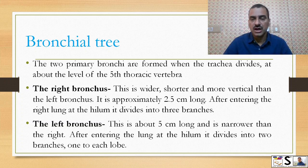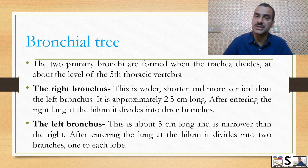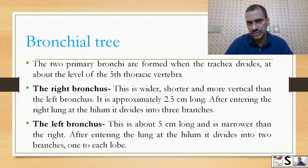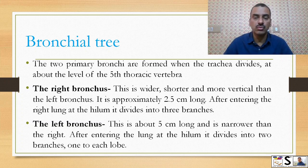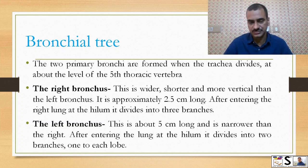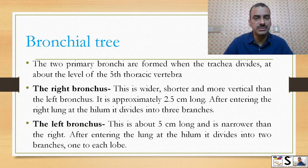The two primary bronchi are formed when the trachea divides at about the level of the fifth thoracic vertebra, forming the right bronchus and the left bronchus. The right bronchus is wider, shorter, and more vertical than the left bronchus, approximately 2.5 centimeters long.